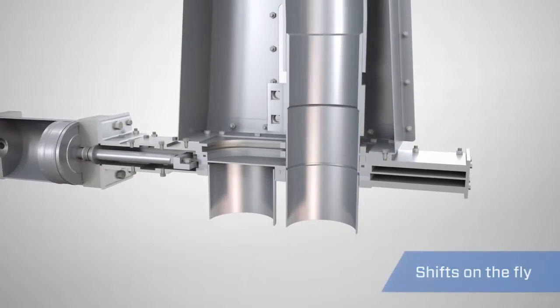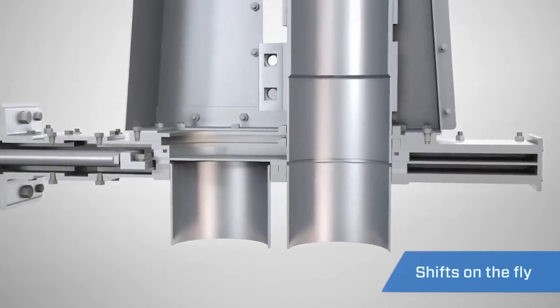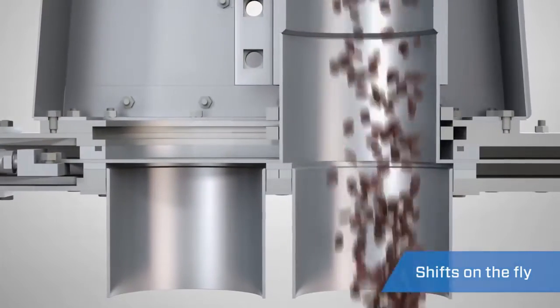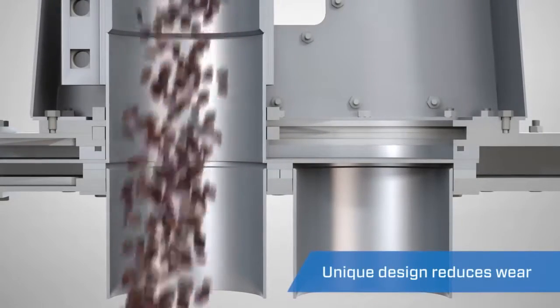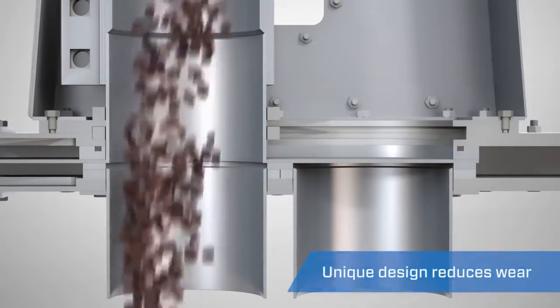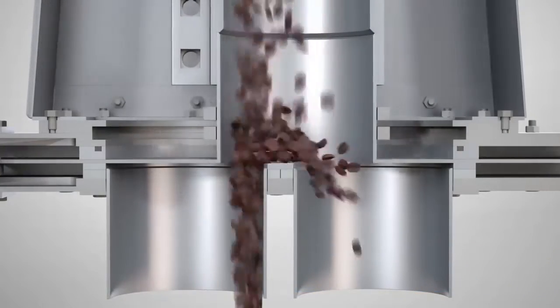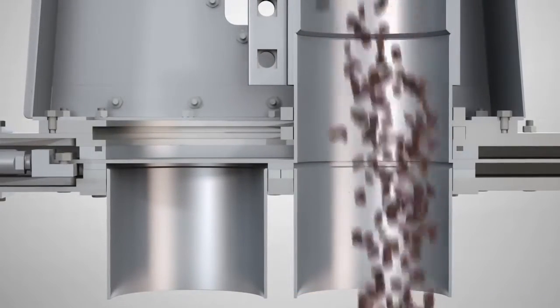The unique design allows the diverter to shift on the fly without shutting down the convey system's blower. This feature makes the system more efficient and reduces wear on the blower. In certain applications, the diverter can shift on the fly while material is being conveyed through the system.